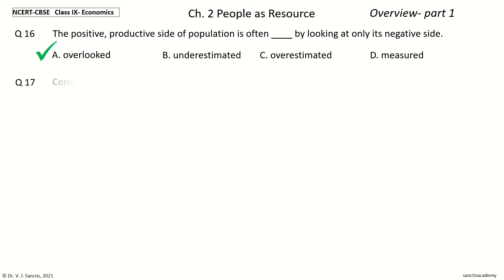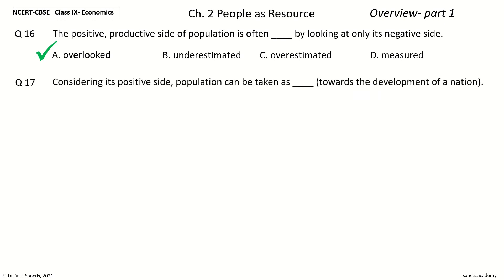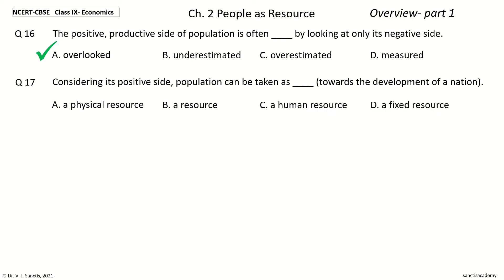Question 17: Considering its Positive Side, Population can be taken as ___ towards the Development of a Nation. The options are: A Physical Resource, A Resource, A Human Resource, A Fixed Resource. Your time to choose. And the answer is: A Human Resource. So, considering its Positive Side, Population can be taken as a Human Resource towards the Development of a Nation.